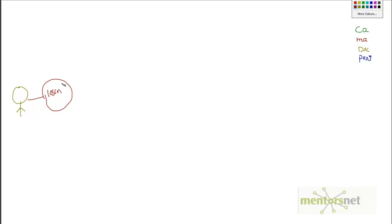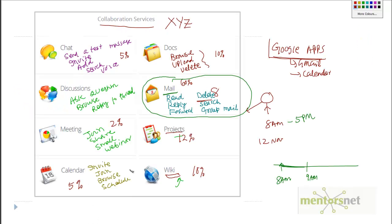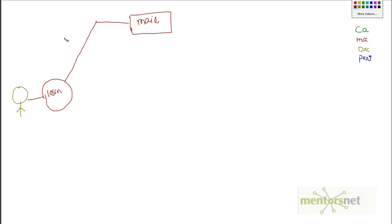After logging in, he might do some mail operations. Let's draw this out and call it the email operation, and put a probability number here. Out of all eight operations, what's the probability he's going to do mail? There's a very good chance — maybe 65% of the time he might check the mail application.